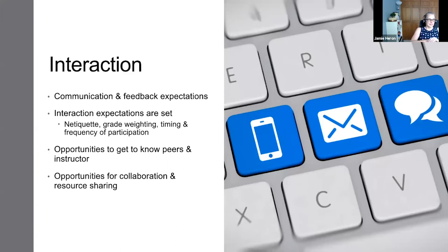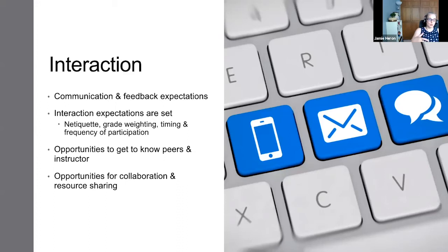The next standard is interaction. It's important to set communication and feedback expectations for students: when you'll be available to email, when you have office hours — face-to-face or remote — and expectations for netiquette, how students should behave in discussion forums or chat areas. Explain how their interaction in the course will impact their overall grade, when they should be participating, how often, and so on. We need to make sure we're providing opportunities to get to know one another and develop the same types of relationships we do in a face-to-face classroom. It is possible to develop these relationships online and get a feel for who your students are.